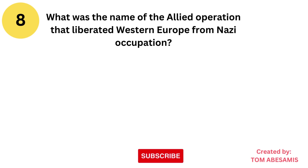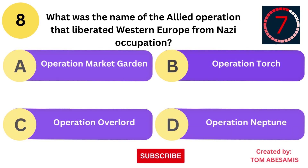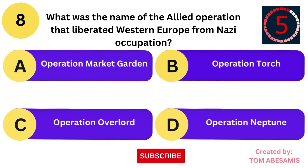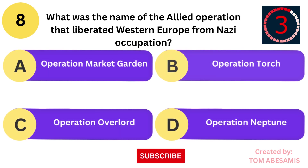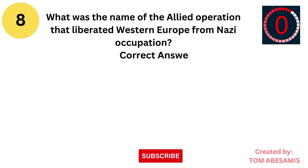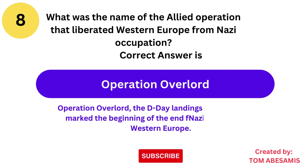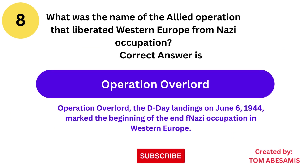Eight. What was the name of the Allied operation that liberated Western Europe from Nazi occupation? Is it Operation Market Garden? Is it Operation Torch? Is it Operation Overlord? Or is it Operation Neptune?